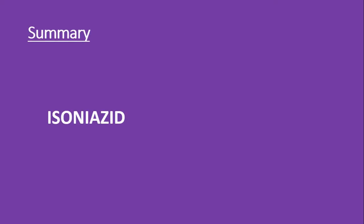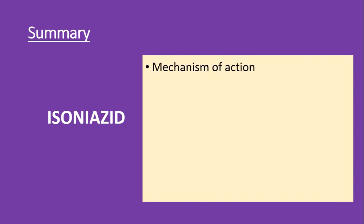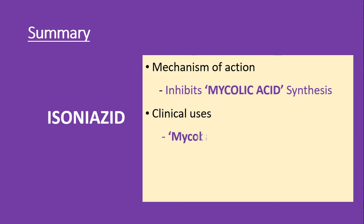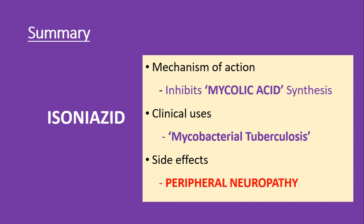Coming to the summary of isonia acid: the mechanism of action is inhibition of mycolic acid synthesis in mycobacterium tuberculosis. Clinically, it is used in the treatment of mycobacterial tuberculosis. The specific side effect is peripheral neuropathy, which can be prevented by giving pyridoxine or vitamin B6 along with the administration of isonia acid.